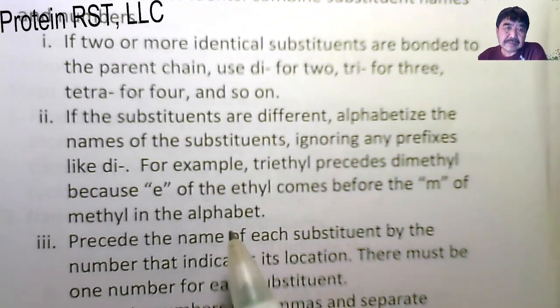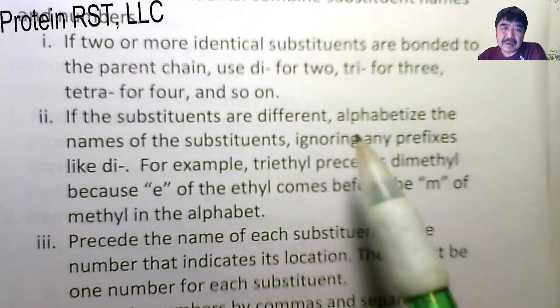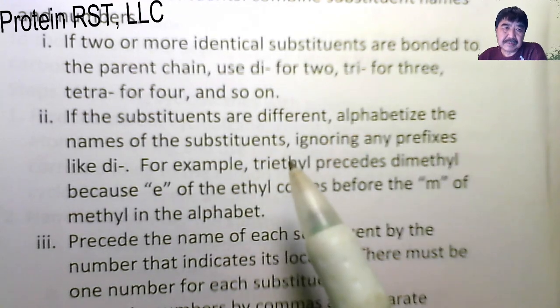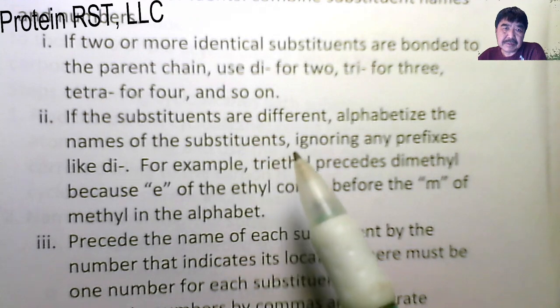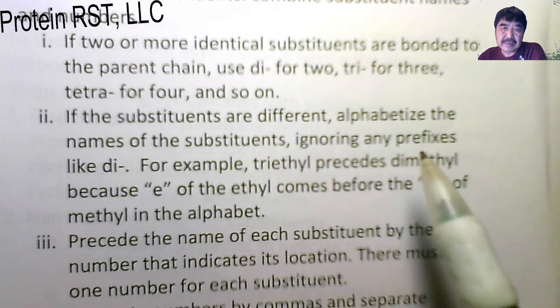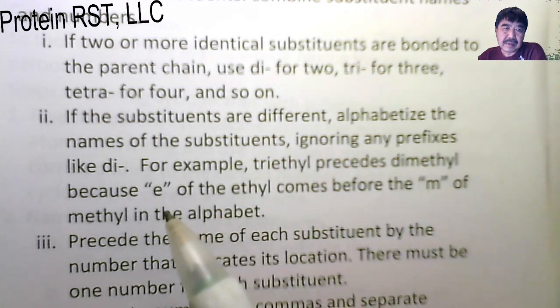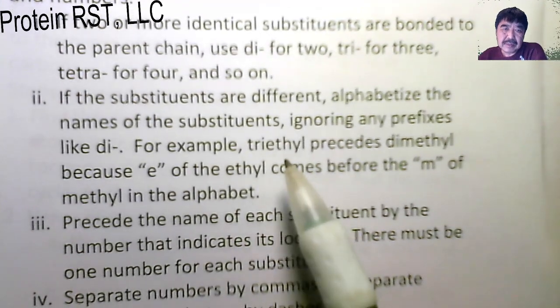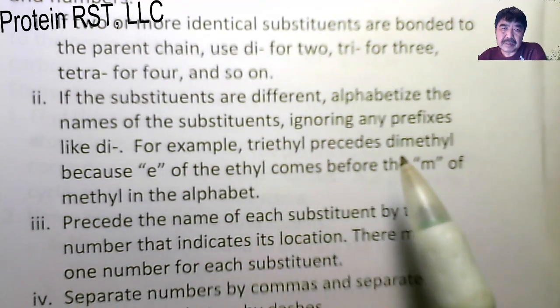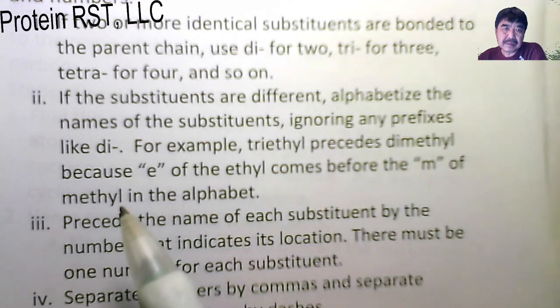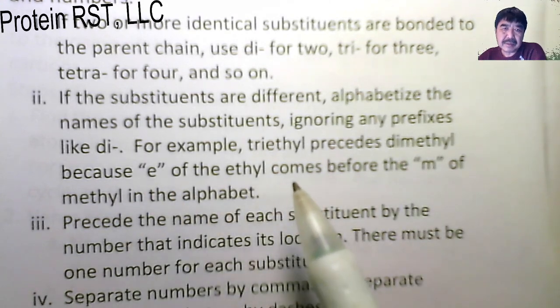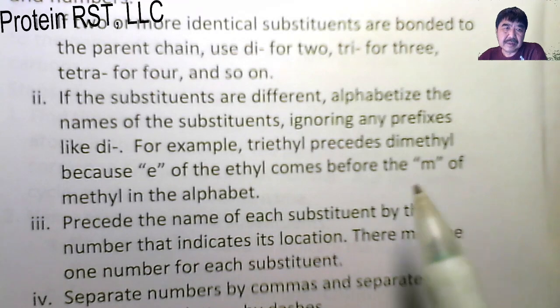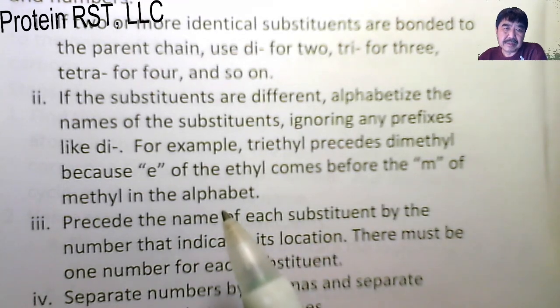If the substituents are different, alphabetize the names of substituents, ignoring any prefixes like di-. For example, triethyl precedes dimethyl because the E in ethyl comes before the M of methyl in the alphabet.